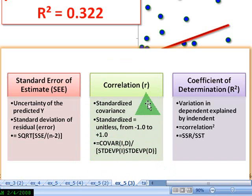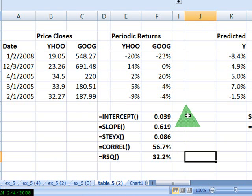If we square the correlation, we get the R squared, or the coefficient of determination, which is the variance, the variation in the dependent variable explained by the independent variable. And it's equal to the sum of squared residuals, or we could also call that the explained variation divided by the total variation.